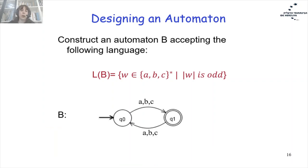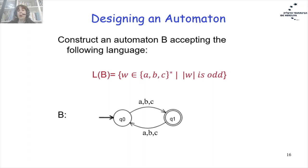The resulting automaton has two states. State Q0 represents the even-length state and is a rejecting state. State Q1 is an accepting state representing the odd-length state. Each time we have an even-length word, we finish reading it at Q0. Each time we have an odd-length word, we finish at Q1, which is the accepting state. In this example we could also write sigma over each of the arrows.